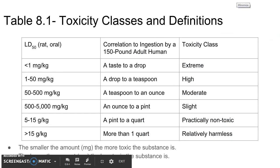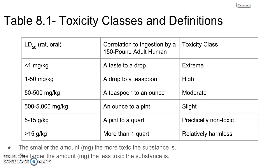The toxicity classes and definitions: if a substance has extreme toxicity, that means a taste to a drop could kill a 150-pound adult human. If it's relatively harmless, that means it takes more than a quart to kill a 150-pound adult human. The smaller the amount needed, the more toxic the substance is, and the larger the amount required, the less toxic it is.